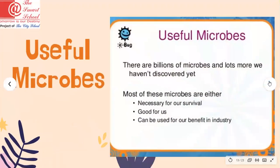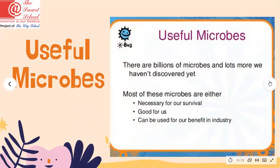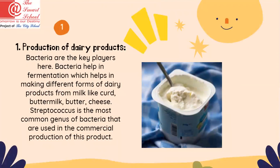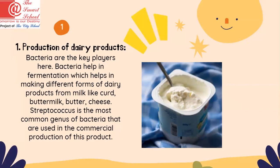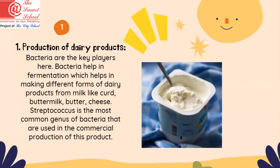Now we have some useful microbes. Billions of microbes can be beneficial and used in industry. The first industrial use is the production of dairy products. Bacteria are the key players here — bacteria help in fermentation, which helps in making different forms of dairy products from milk, such as liquor, buttermilk, butter, and cheese. A very common example is the bacteria Streptococcus, which is the most common genus used in the commercial production of these products.